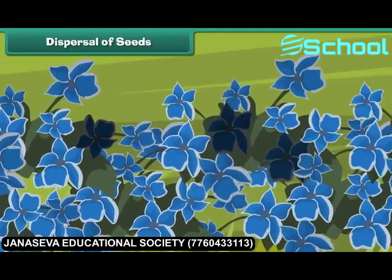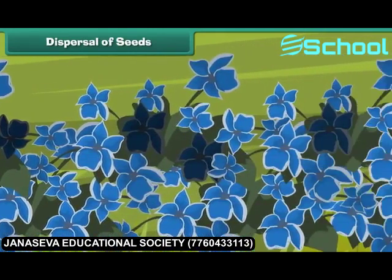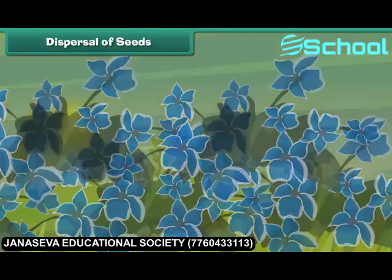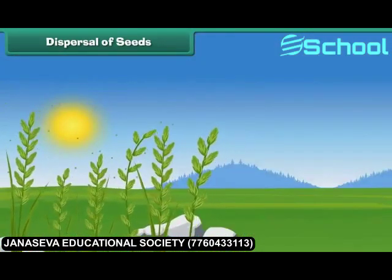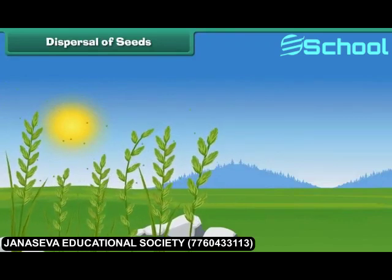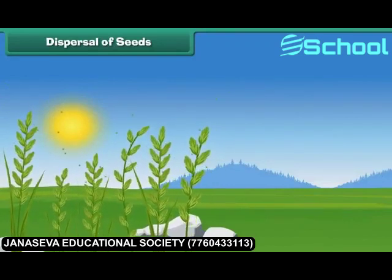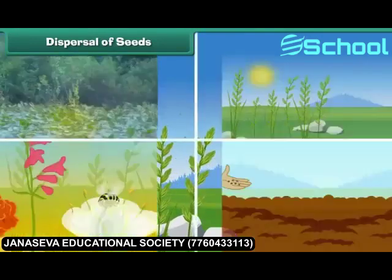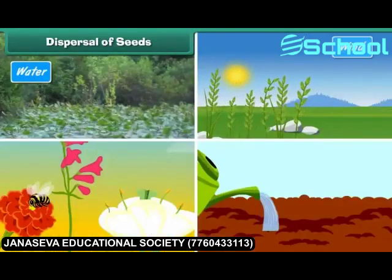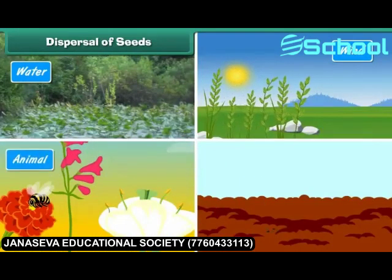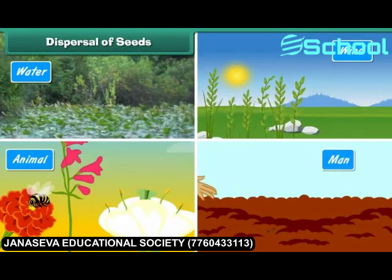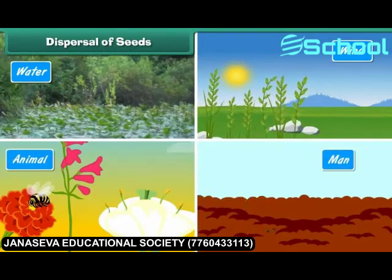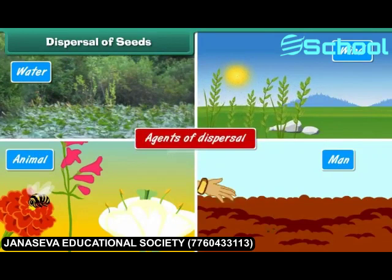Most of them will naturally die. So it is necessary that the seeds of plants should be scattered over large distances. Nature has arranged some methods of seed dispersal — by water, wind, animals, and even man. These are known as agents of dispersal.